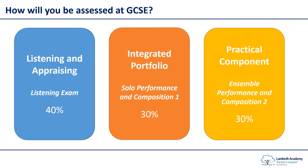You will be assessed at GCSE through the following three areas. You will have a listening and appraising exam which is worth 40 percent — this is very similar to the types of assessments and exams that you have done in Year 9. You then have two portfolios: the integrated portfolio and the practical component, both worth 30 percent each. These are pieces of coursework where you will do a solo performance, create a composition, then do an ensemble performance with a group and a second composition to a brief. So you have one exam and 60 percent is based on coursework — if you're a learner who excels in the classroom, this is a very good course for you.